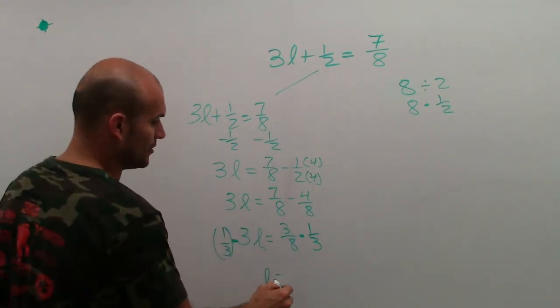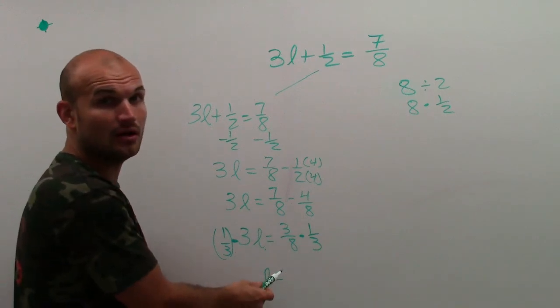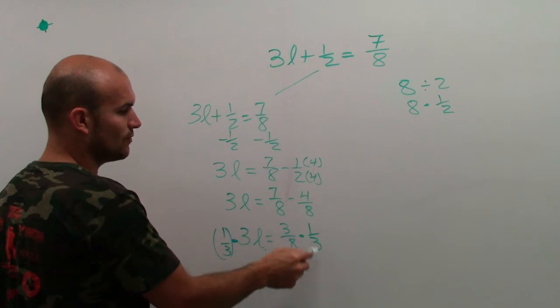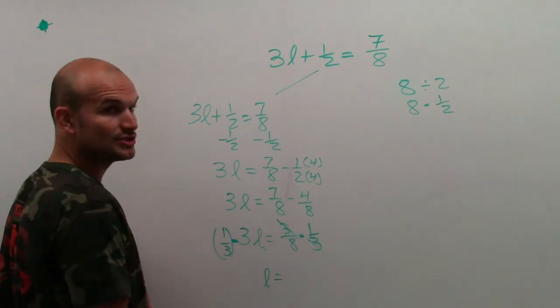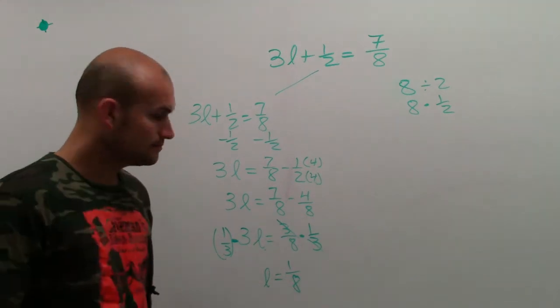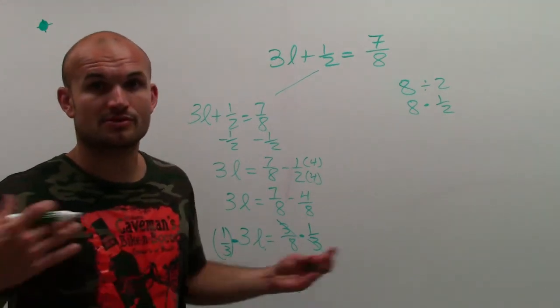So therefore, I have L equals 3 eighths times 1 third. My 3's are going to equal 1. And so therefore, I'm left with L equals 1 eighth. So that's one way.